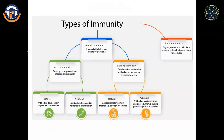Innate immunity is inborn immunity — when we are born, we already have certain defenses against foreign organisms, provided by certain organs, tissues, and cells of the immune system, such as skin. Adaptive immunity is acquired either by active or passive methods. In active immunity, natural infection occurs or vaccination is provided to induce the body to develop antibodies.